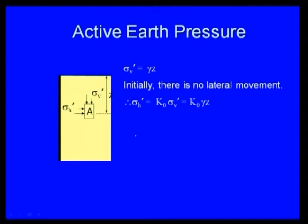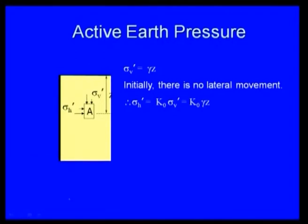For active earth pressure, sigma V is the overburden, generally calculated as gamma times z. When soil is at rest — meaning there is no movement, no lateral movement — sigma V prime equals gamma times z, and sigma H prime equals K0 times sigma V prime, so K0 equals sigma H prime divided by sigma V prime.